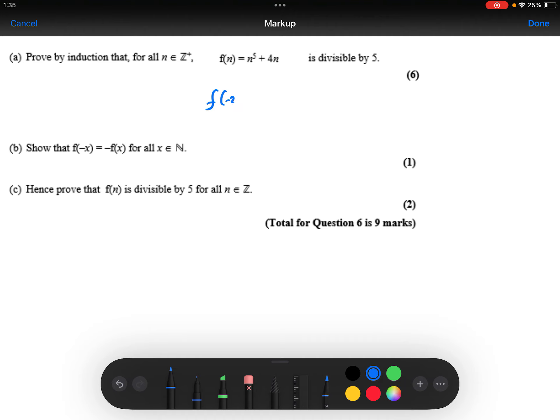So, if I substitute minus x into our rule, I will get minus x to the power of 5 plus 4 times minus x. Now, minus x to an odd power will be the same thing as minus x to the power of 5. And the 4 times minus x is minus 4x, which I can factorize that minus outside, like so. And that right hand side, there you can see the x to the power of 5 plus 4 lots of x is f of x. And so, we have shown that f of minus x is equal to minus f of x.